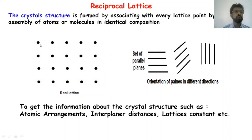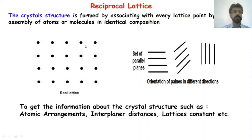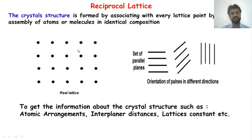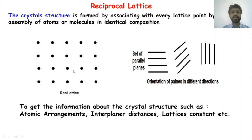The atoms which are in one plane are known as the atomic plane. In every type of crystalline material, there are a huge number of sets of parallel planes whose orientations are different in different directions. Such an arrangement is also known as the real lattice or the direct lattice.